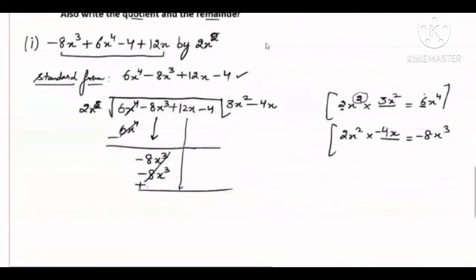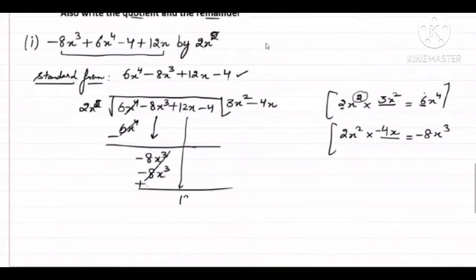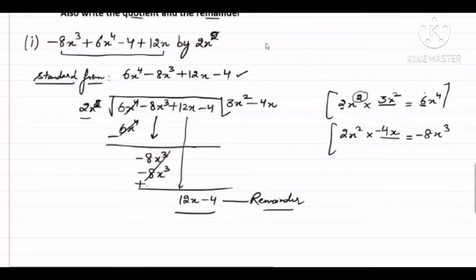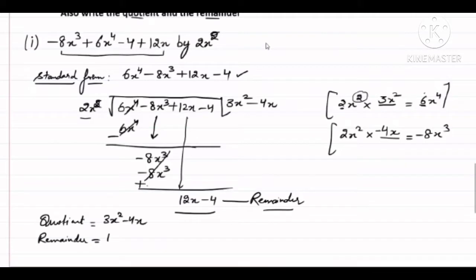Now the next term is 12x, write it below. Now look — the degree of what remains, that is 12x minus 4, is 1. The degree of the divisor 2x² is 2. When the remainder's degree becomes less than the divisor's degree, further division is not possible. So that is your remainder. The quotient is 3x² minus 4x, and the remainder is 12x minus 4.